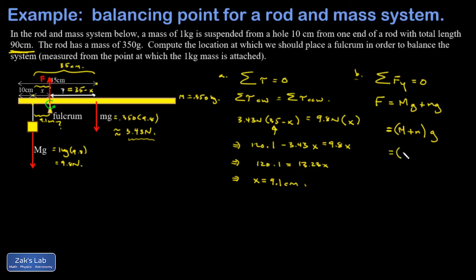So I end up with a total mass of 1.35 kilograms, and then G is 9.8 meters per second squared. And it turns out this force is 13.23 newtons. I normally round to three sig figs, so I'll call it 13.2.